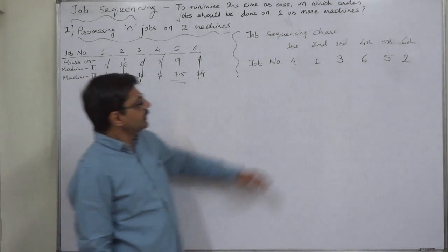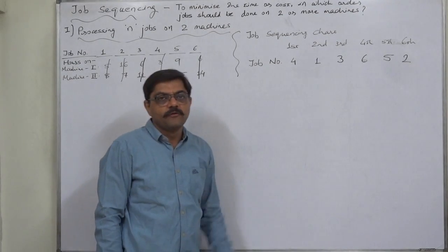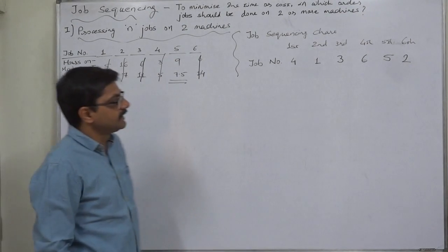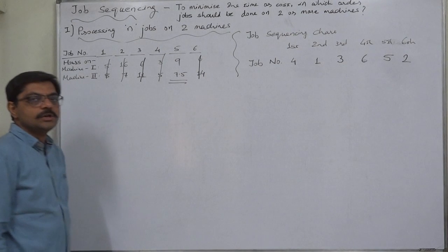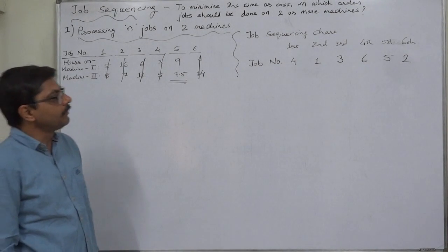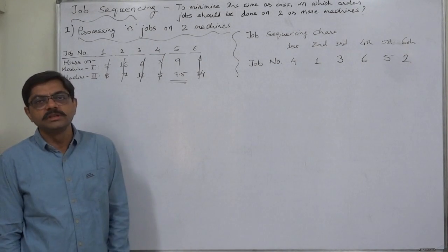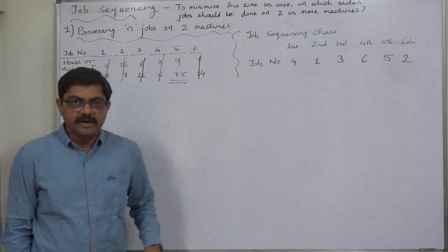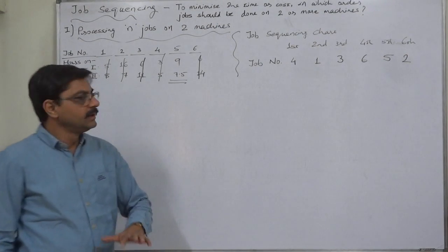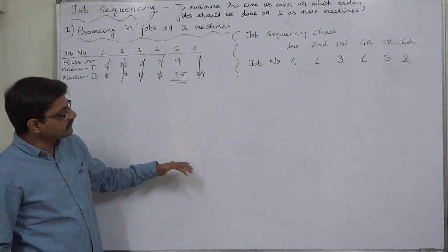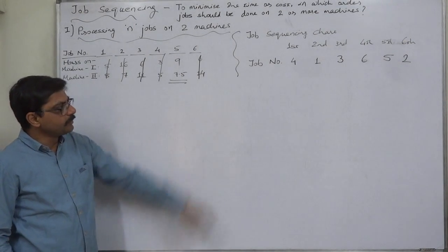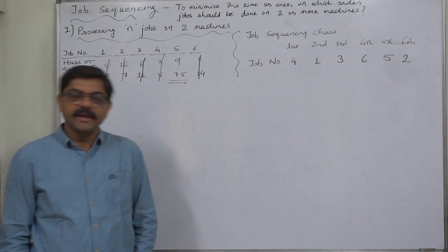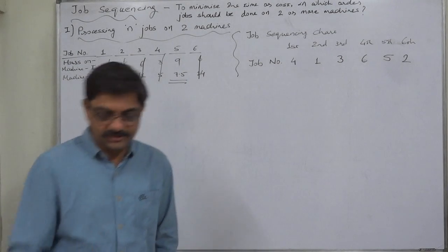First of all we are going to start with job four, and then one, three, then six, then five and two. In this order we are going to complete all these six jobs. This is the end of part one of the solution. In the next part we are going to prepare the statement of total time and idle time. Thank you very much.